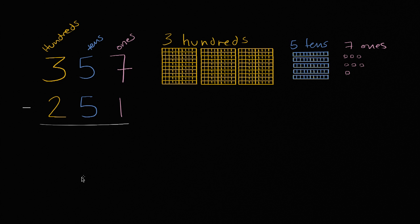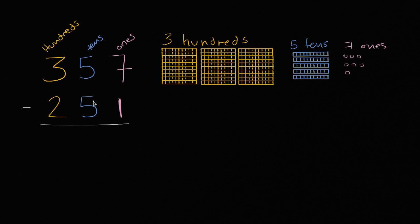So let's work through this together. Let's first focus on the ones. We're starting off with seven ones in 357 — seven ones. And we are going to take away one one right over here. So let's take away one one, and then we're going to be left with six ones.